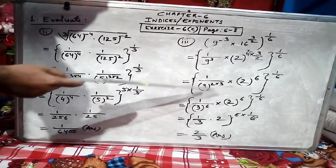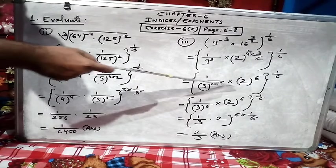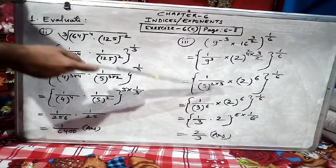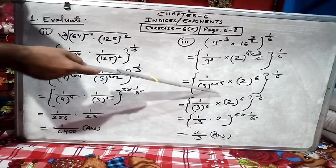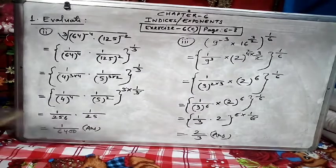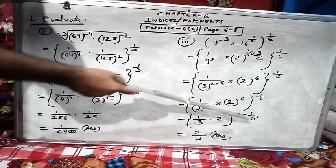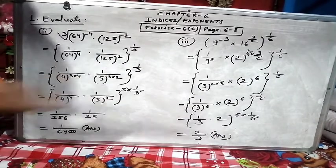Now here 9 I wrote as 3^2. When I write 3^2 then with power 3, it becomes 3^6 because square is the new power and 3 is the old power. So here also power 6, here also power 6. Both 6s come outside and become a common power, and 6 with 6 gets cancelled.